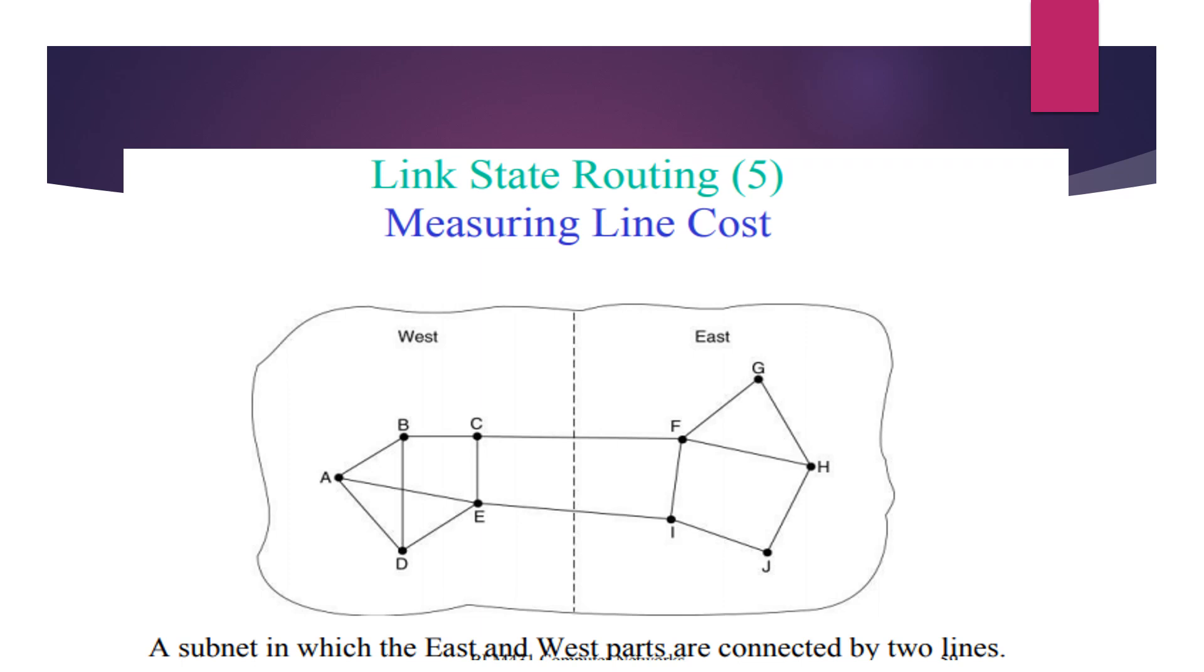Once delay measurement is done, traffic management is also taken care of in link state routing. There should be an even distribution of the traffic. For example, a West-East subnet is shown here with two lines connecting these two networks: C-F and E-I. By chance, suppose the C-F line gets crowded with very high traffic. Because of the measuring line cost step which is carried out, the traffic is transferred to the alternative path, that is E-I.